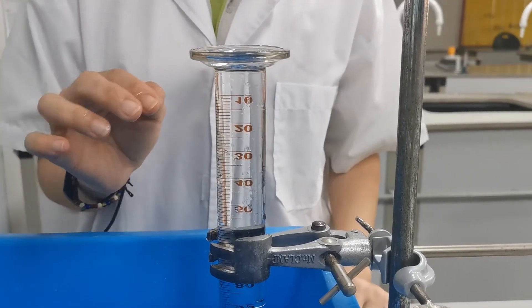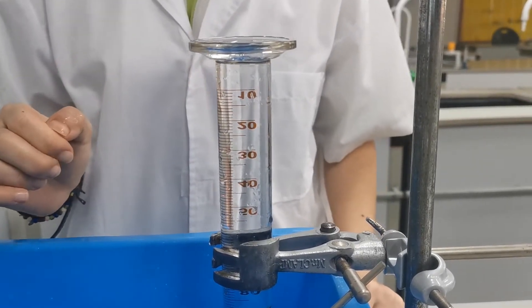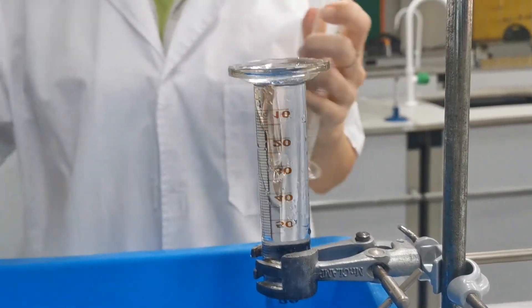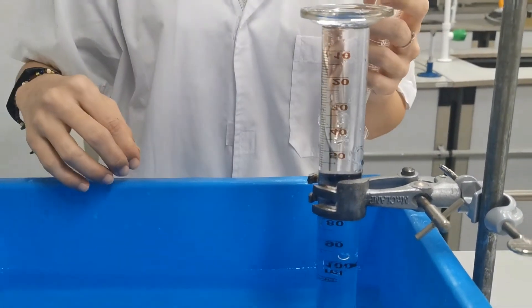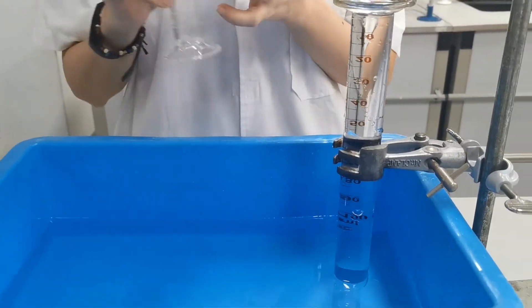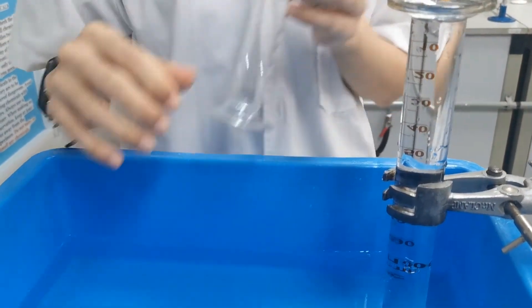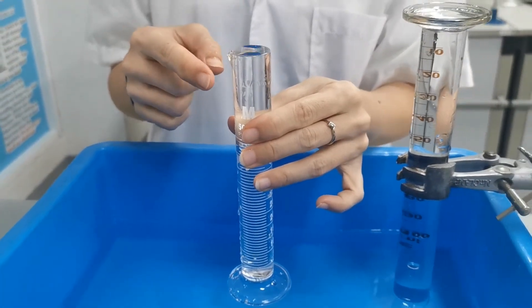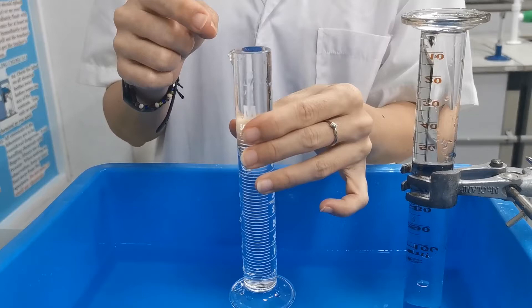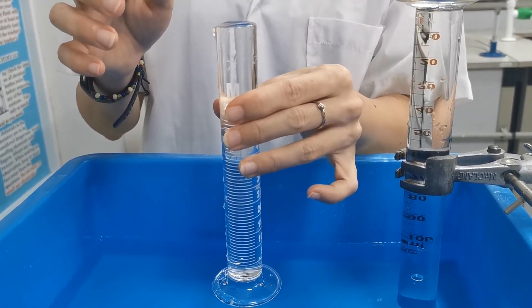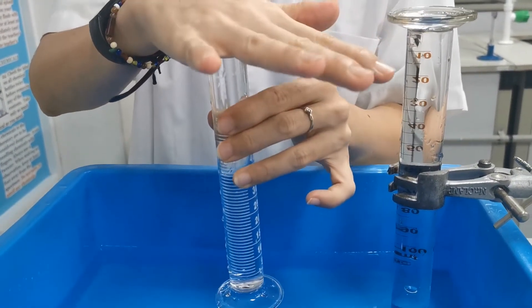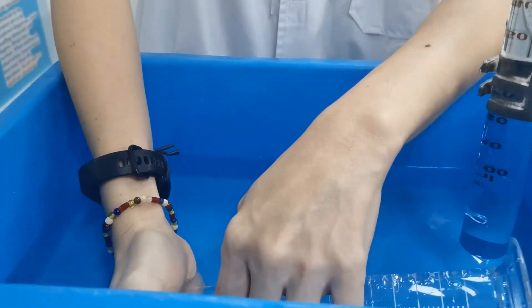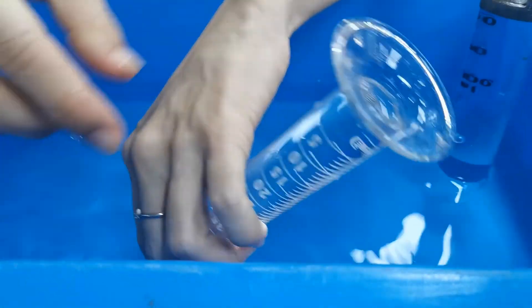Now for a second method with a smaller tray, we just fill this tube with water. We fill this measuring cylinder up to the brim with water, then seal it using our hand or thumb if it fits, and bring it down under the water level.